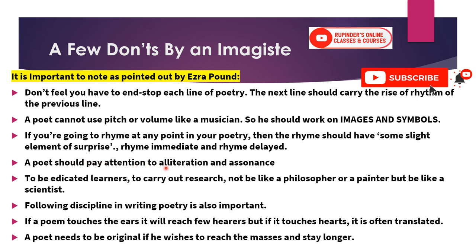Poets should also pay attention to alliteration and assonance. Alliteration means the repetition of the same sound. If a vowel sound repeats, it is assonance; if a consonant sound repeats, that is consonance. Vowels are A, E, I, O, U.